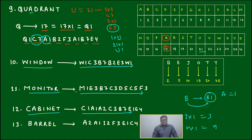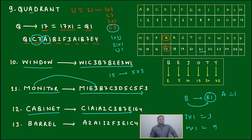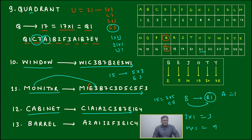For example, O is represented as E3 — O's positional number is 15, and 5 into 3 gives E3. But the same 15 can be written as 3 into 5, giving C5. So in place of E3, we can also write C5. This is one of the options. And this leads to a very interesting question that can be framed about MONITOR.